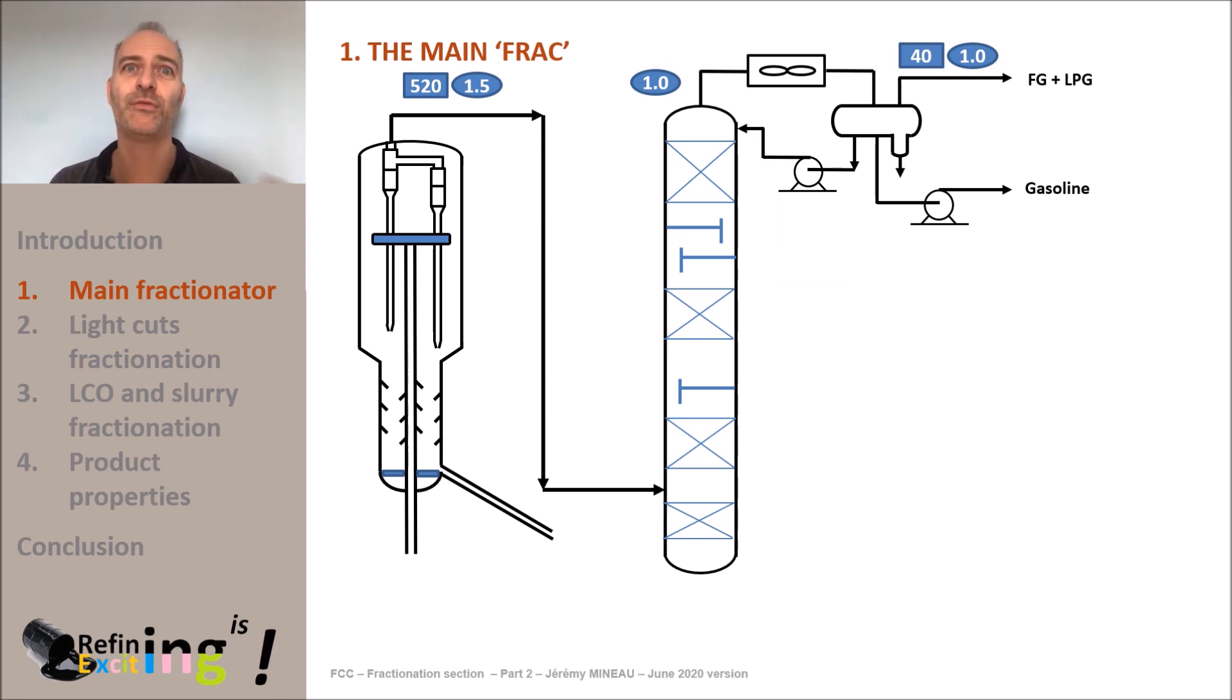Then depending on the needs of the refinery and its refining scheme, several cuts can be found with different denominations and cut points. In our case we will take an example of a side draw of a cut that will be called LLCO, for light light cycle oil. This cut is the light part of the LCO that we have seen in previous parts.